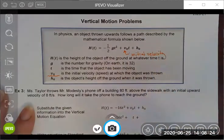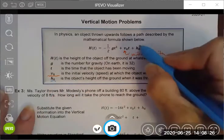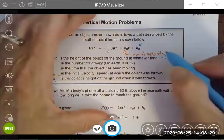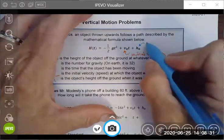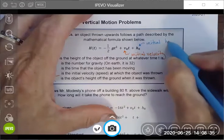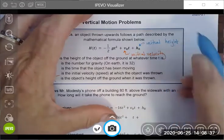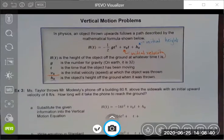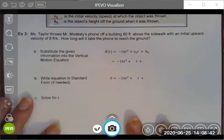And the h₀ is just the height of the object when it begins its motion, so I'm going to call that initial height. This formula can be used to solve all sorts of cool problems. The one we're going to look at today...